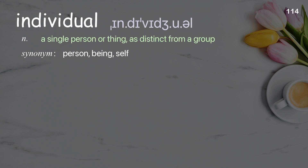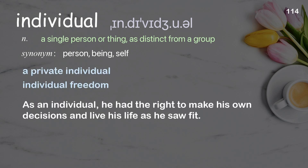Individual: A single person or thing as distinct from a group. Examples: A private individual. Individual freedom. As an individual, he had the right to make his own decisions and live his life as he saw fit.